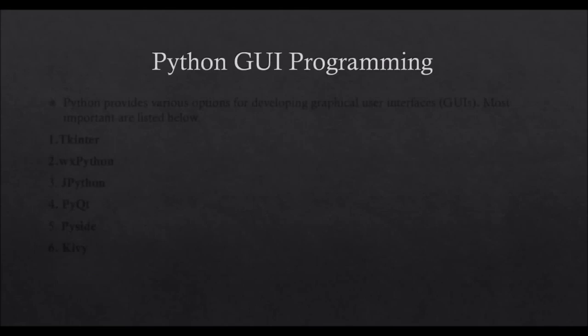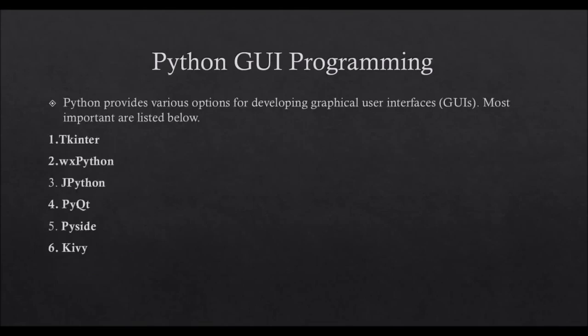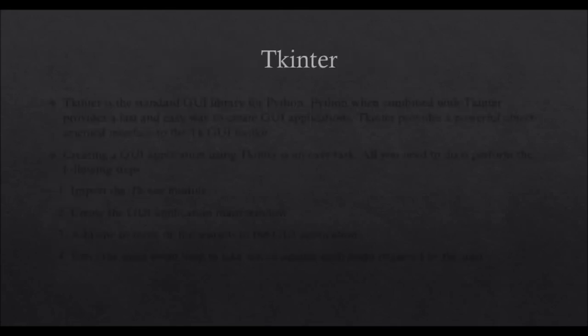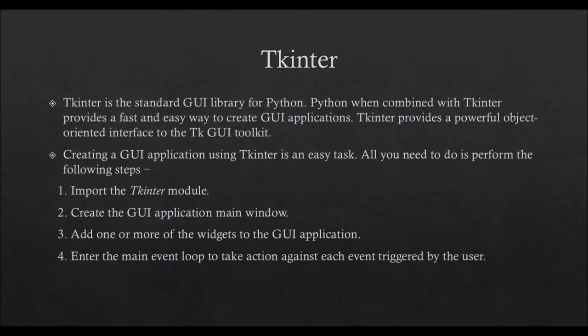Python GUI programming: Python provides various options for developing graphical user interfaces. The first one is TK inter, which is the basic GUI option in Python. These toolkits are used to design GUI frameworks in Python, so in this tutorial we are going to cover the TK inter GUI framework. TK inter is the standard GUI library for Python — when combined with TK inter it provides a fast and easy way to create GUI applications, with a powerful object-oriented interface to the TK GUI toolkit.